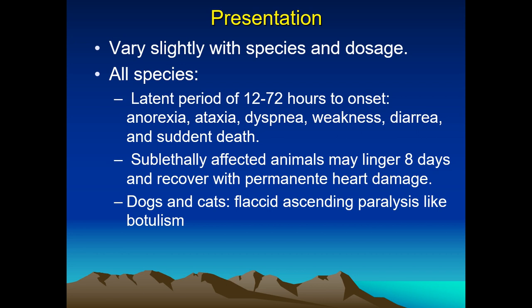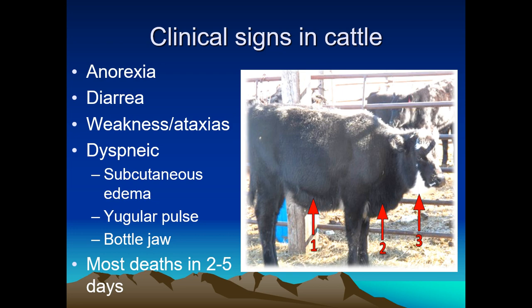In horses, severe sweating and colic are added to the common signs; they can die suddenly but delayed deaths after acute exposure are also seen. Dogs and cats are somewhat unique because they manifest flaccid ascending paralysis resembling botulism, and typically die from respiratory paralysis. A calf showing anorexia, diarrhea, weakness, and ataxia was dyspneic from heart failure and developed subcutaneous edema, distended jugular pulse, and bottle jaw — all visible in the image — ten days after acute exposure.